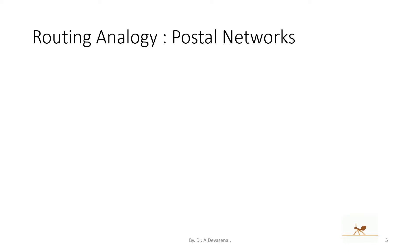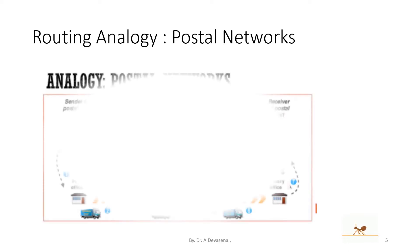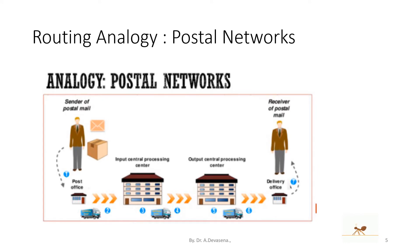Let us see the routing analogy example as a postal network. Here the sender sends the mail — it may be a letter or a parcel. First, the parcel or letter has to reach the post office. Then from the post office it is carried to the input central processing center. From the input processing center it is carried to the output central processing center, from where it reaches the delivery office, and finally the receiver of the postal mail.